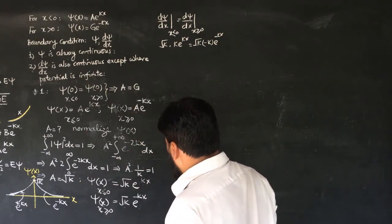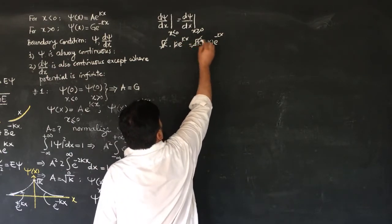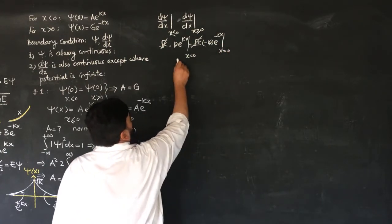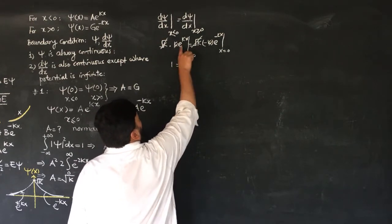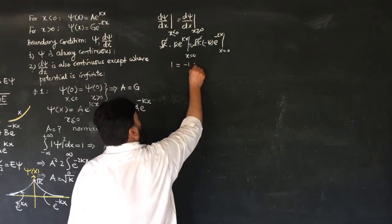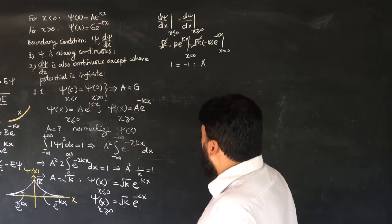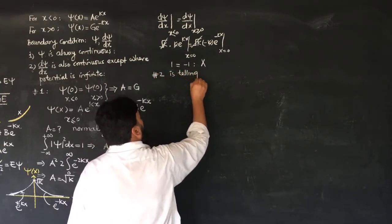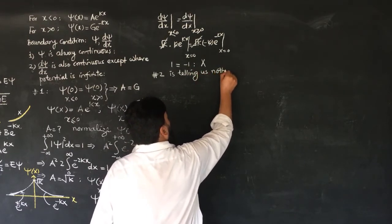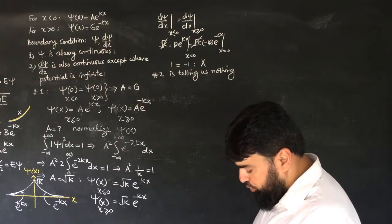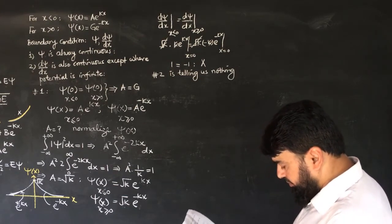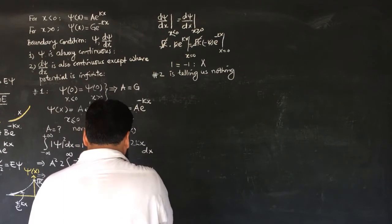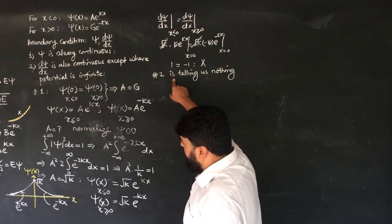These are the derivatives. The k will cancel on both sides and when I put x = 0 on both sides, I get 1 = −1, which is a trivial result. So the second boundary condition is giving us nothing — it is not providing any new information according to our geometry. We have plotted the wave function and applied the boundary conditions.